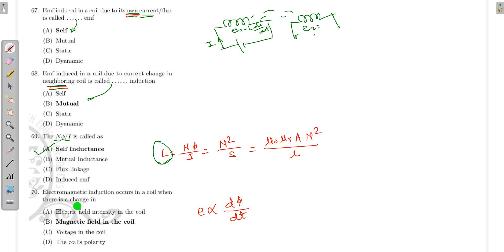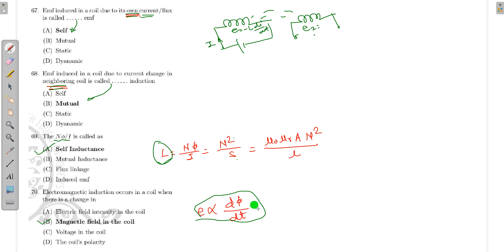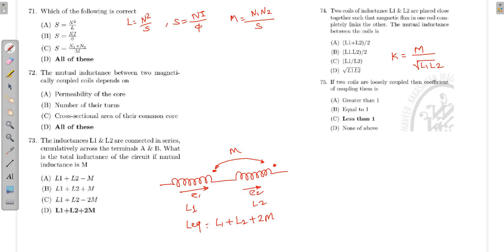Electromagnetic induction occurs in a coil when there is a change in the magnetic field. EMF is proportional to dφ/dt.